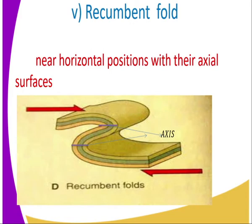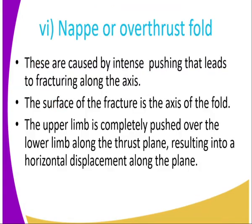Then we have the recumbent fold. As you can see in the diagram, it is almost horizontal, lying in near-horizontal positions with the axial surfaces nearly flat. One of the limbs is overturned, almost on top of the other. That is the recumbent fold.